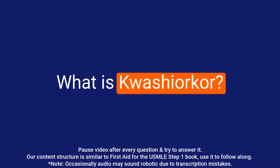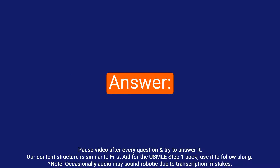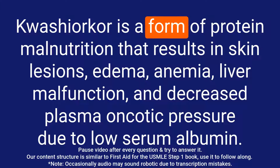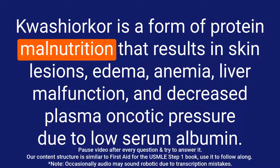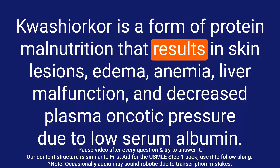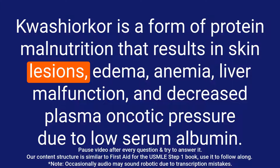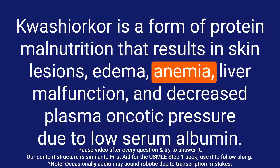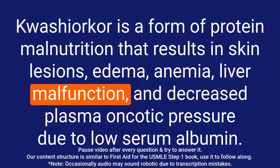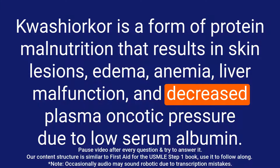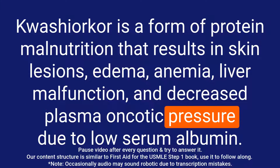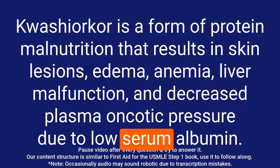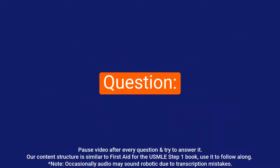Question: What is kwashiorkor? Answer: Kwashiorkor is a form of protein malnutrition that results in skin lesions, edema, anemia, liver malfunction, and decreased plasma oncotic pressure due to low serum albumin.